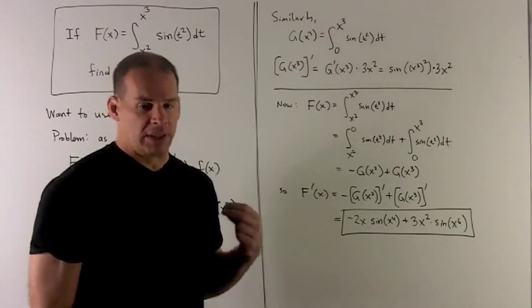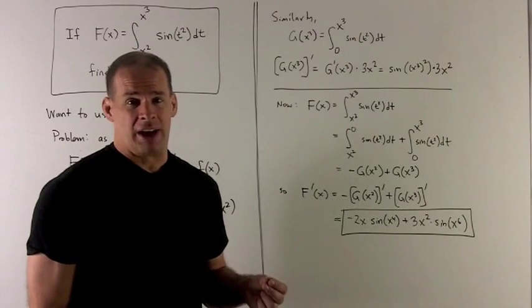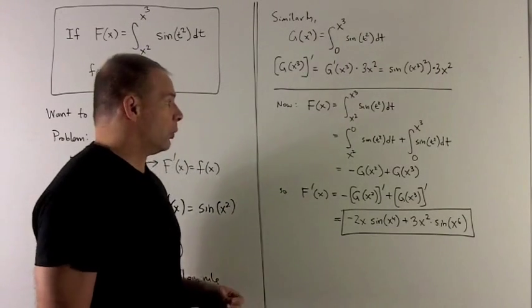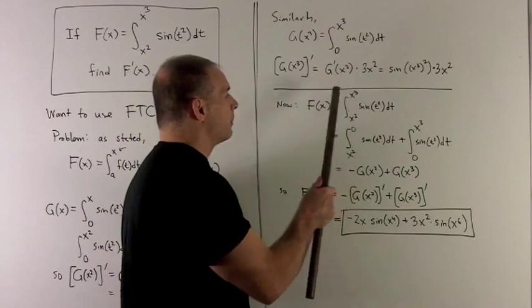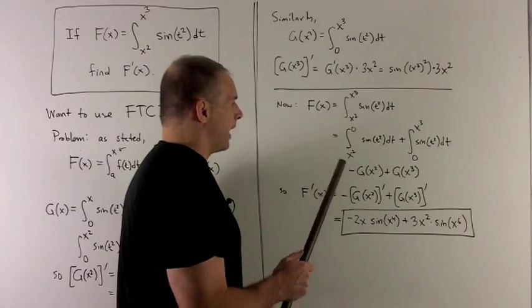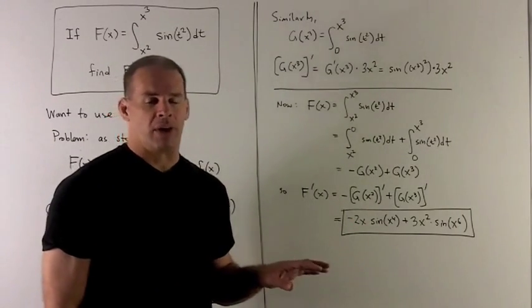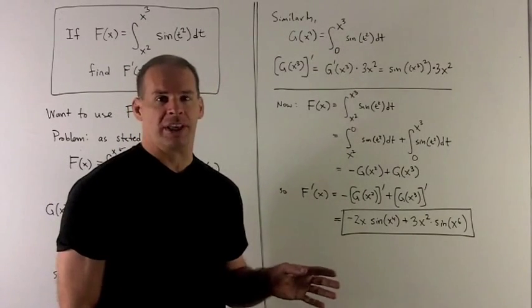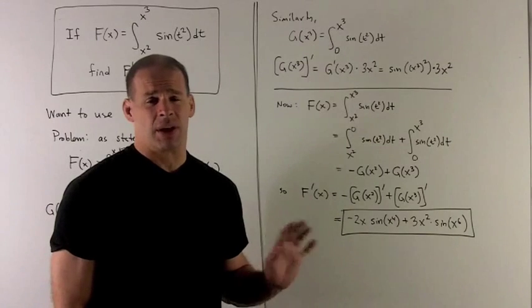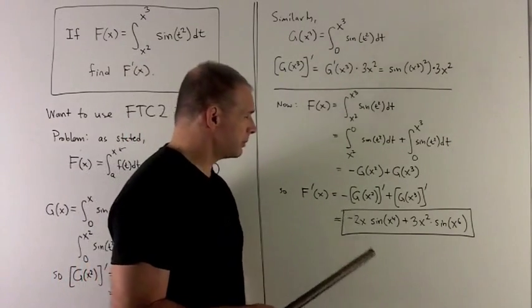Now we get to the punchline. How do I bring these two in to get tied up to my original F? Well, we note F of X, I'm going to split this integral up over the regions from X squared to 0 and 0 to X cubed. I'm not worrying about whether 0 is actually in the domain of my F's or anything like that. I don't really care. The point is, I could find some constant that lets me split the region.